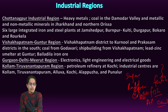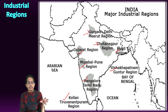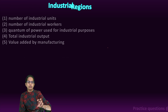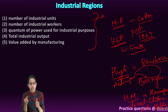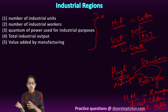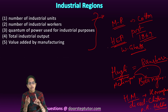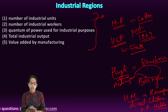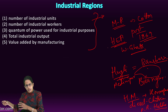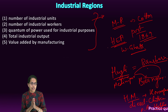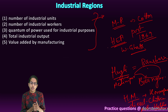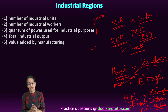This covers the major industrial clusters visible on the map — the important areas where industrialization was brought in. To recap, the five factors determining an industrial region are: the number of industrial units, the number of workers, the quantum of power load, the value addition by manufacturing plants, and total industrial output. This concludes the major topics covered under industrial geography, with many more interesting lectures to come.